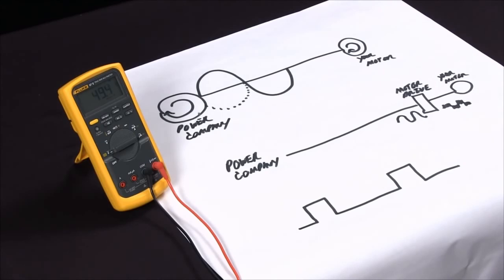And so this is how you can use the Fluke 87 to measure frequency and duty cycle and actually measure frequency much more accurately on motor drive systems.